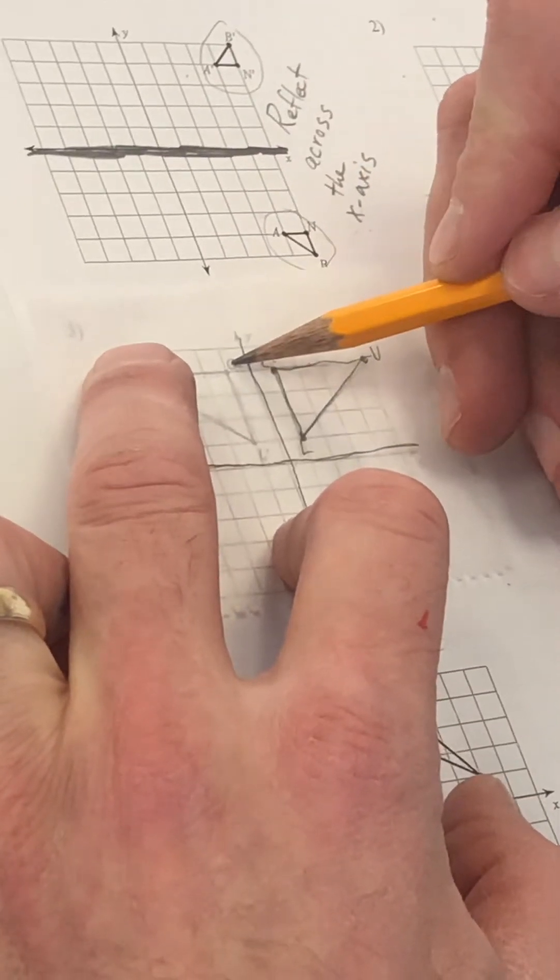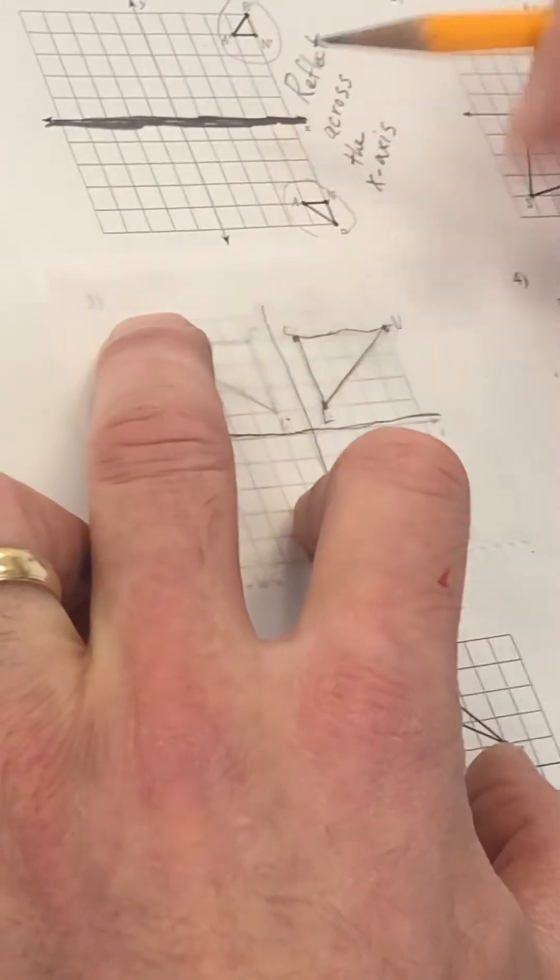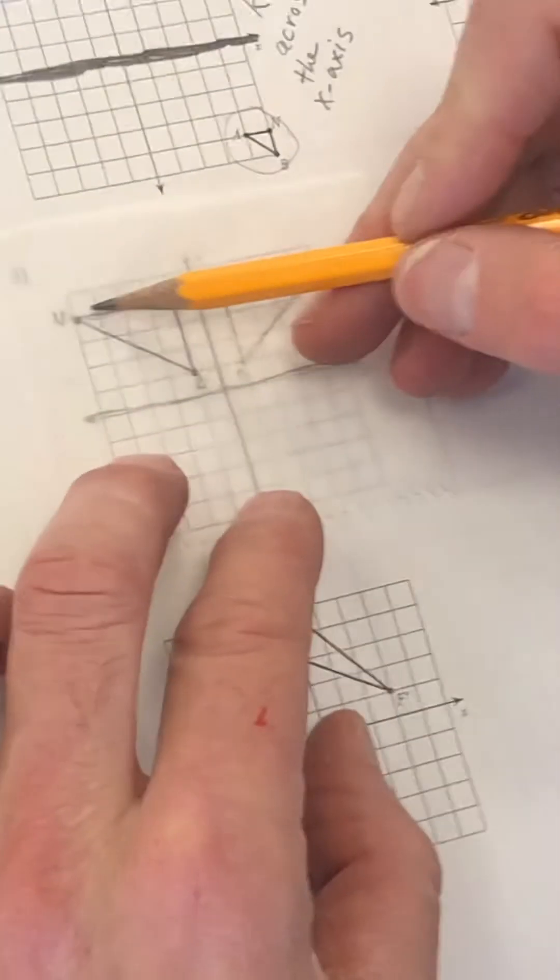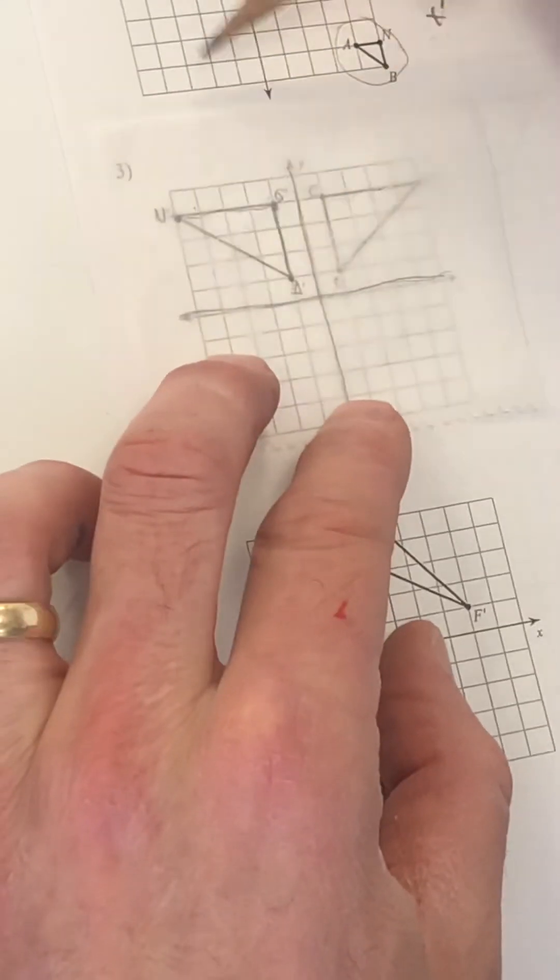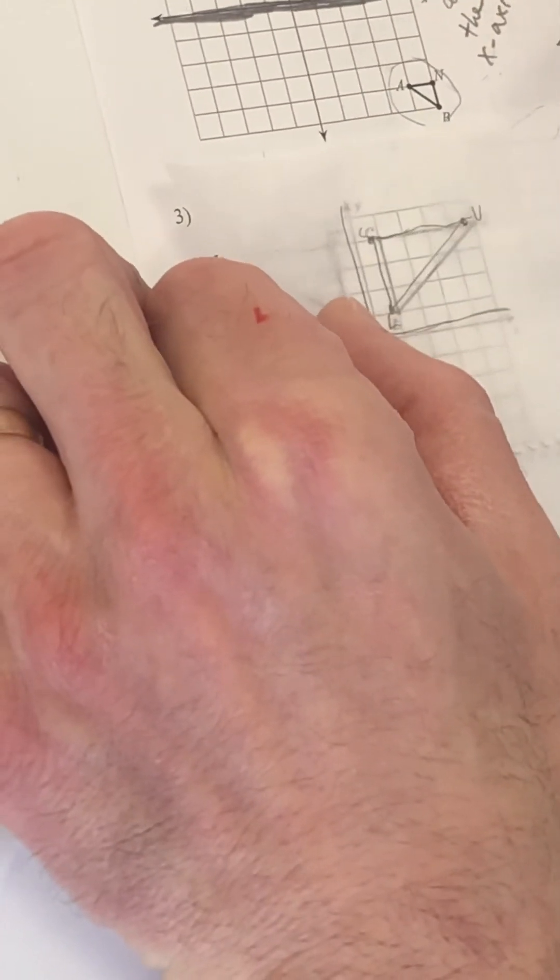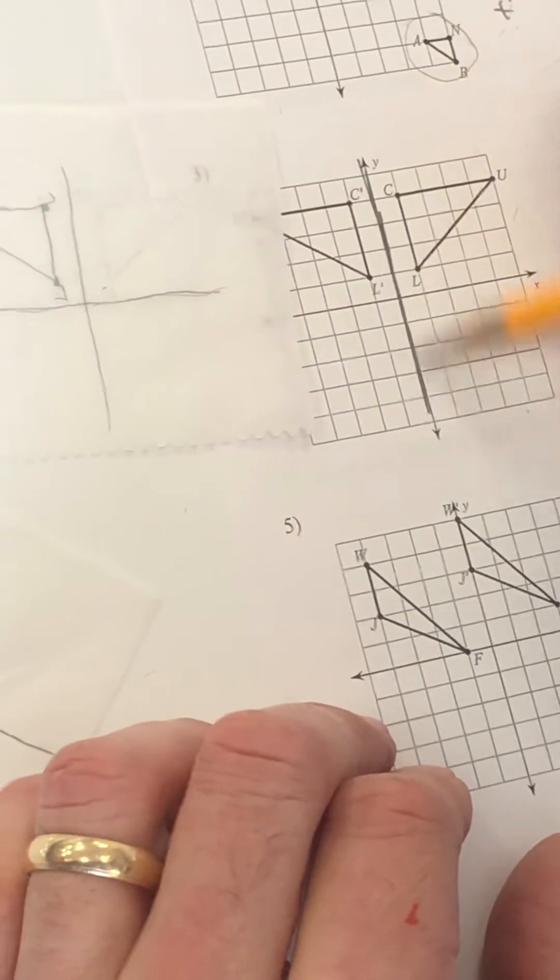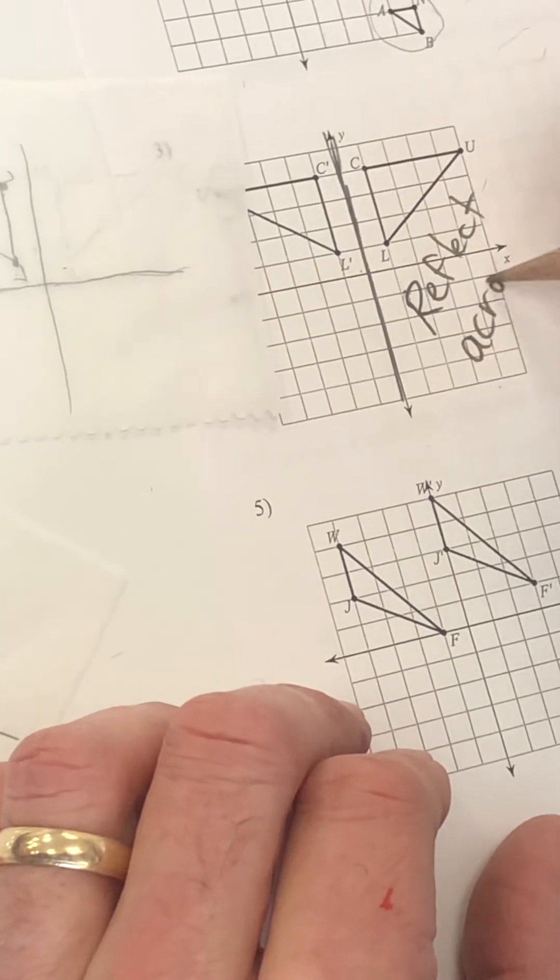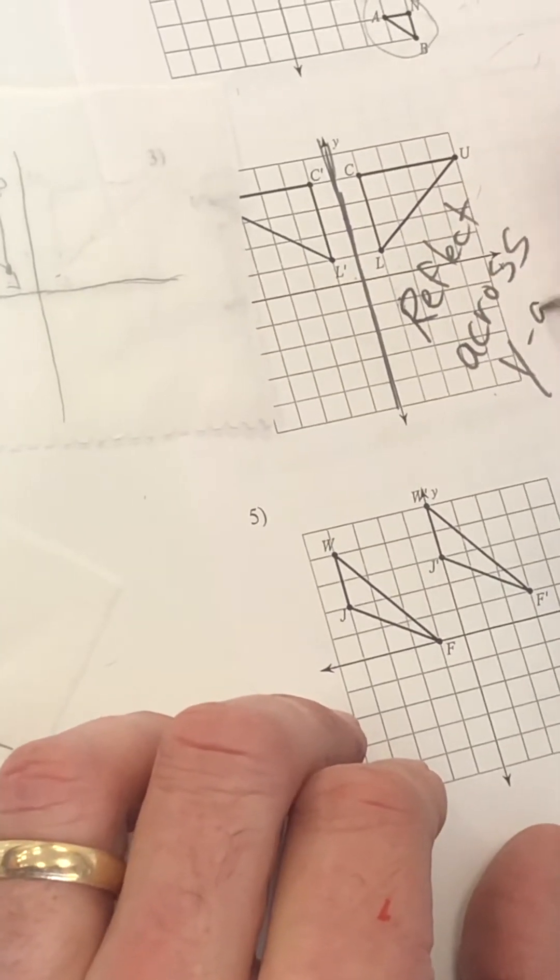Three's right here. C, C prime, L, L prime. It looks to me like reflect. Watch. I'm going to flip my paper over. And boom. See how it lines right up? Lines right up on it. Boom. So I'm going to reflect it across the Y axis. So reflect across the Y axis.